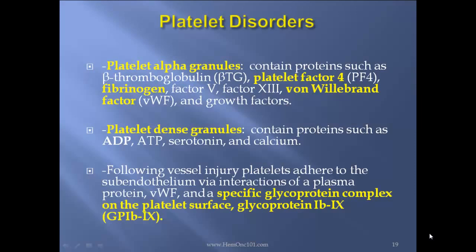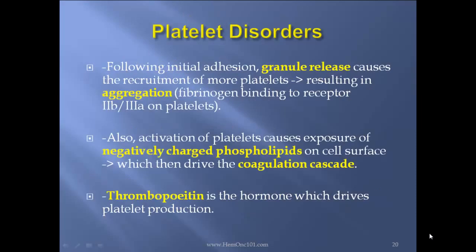Following vessel injury, platelets adhere to the subendothelium through interactions of the plasma protein von Willebrand factor and a specific glycoprotein complex on the platelet surface — glycoprotein 1B/9. Following initial adhesion, granule release causes recruitment of more platelets, resulting in aggregation, as fibrinogen binds to receptor 2B3A on platelets. Activation of platelets causes exposure of negatively charged phospholipids on the cell surface, which drives the coagulation cascade. Thrombopoietin is the hormone which drives platelet production.